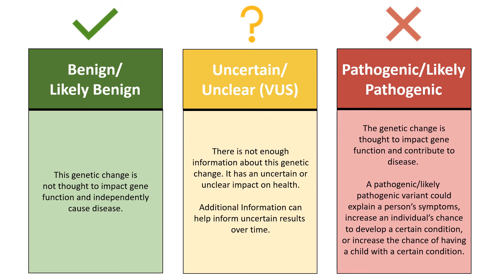Uncertain variants are also sometimes referred to by the acronym VUS, which stands for variant of uncertain significance. This means that, at this time, there is not enough evidence to determine whether a variant causes health differences.